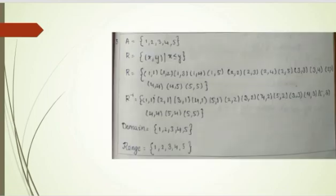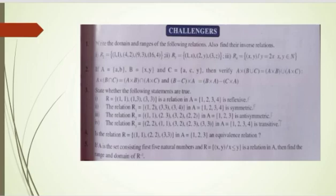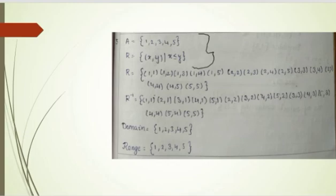Question five: if A is the set of the first five natural numbers and R is a relation on A, find the domain, range, and inverse. The first five natural numbers are {1, 2, 3, 4, 5}. We write the information and use the given equation for the relation.